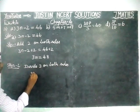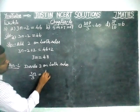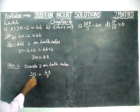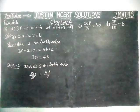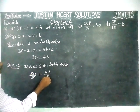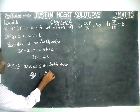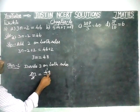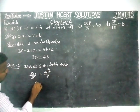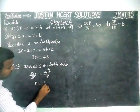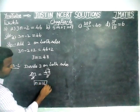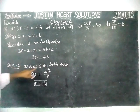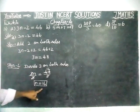Dividing both sides by 3: 3n divided by 3 is equal to 48 divided by 3. The 3s get cancelled. 48 divided by 3 equals 16. So n is equal to 16. To summarize: first we added 2 on both sides, then we divided by 3 on both sides, and we got n equal to 16.